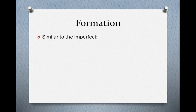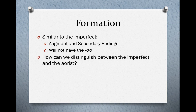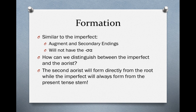Concerning their formation, second aorists are similar to the imperfect tense: they're going to have the augment and secondary endings, but they will not have the sigma alpha. The imperfect doesn't take sigma alpha either. So the question becomes: how do we distinguish between the imperfect and the second aorist if they have these similarities? The answer is that the second aorist will form directly from the root, while the imperfect always forms from the present tense stem. The second aorist will always form directly from the root while the imperfect always forms from the present tense stem.